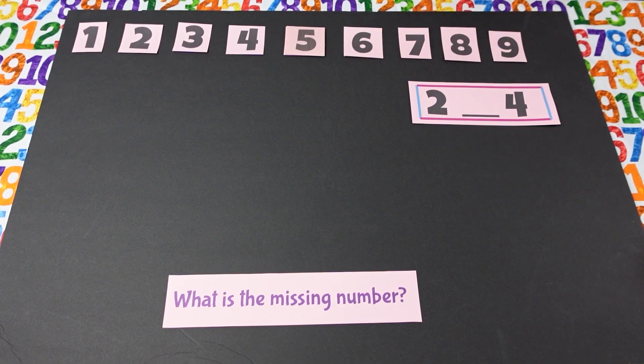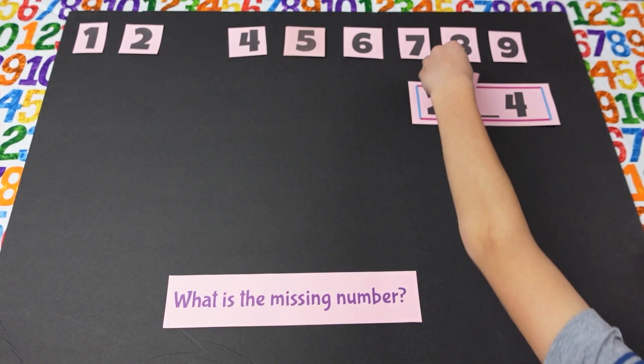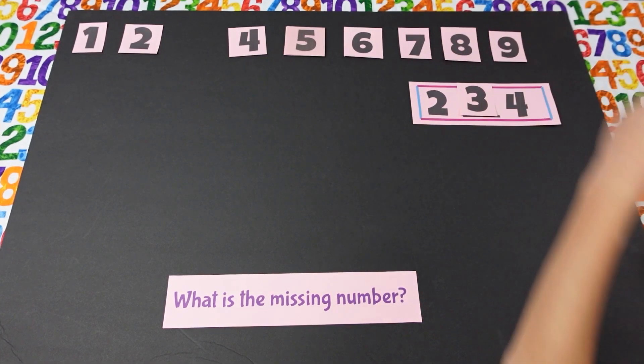Jonathan, what number is this? Two. And what number is that? Four. Well, what's missing in between there? Three. Can you put the missing number there? Perfect.